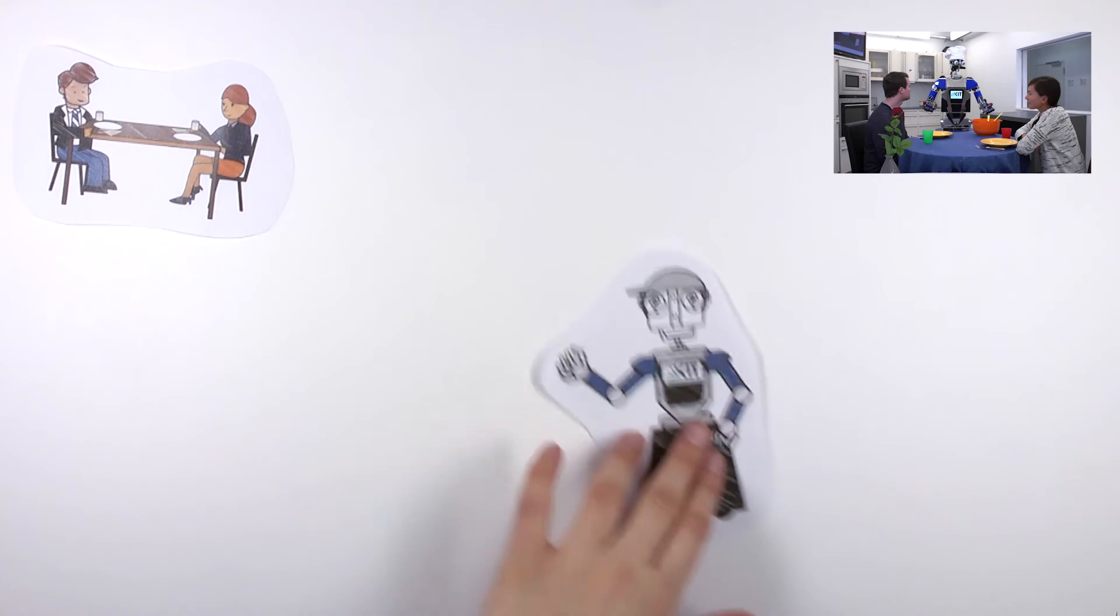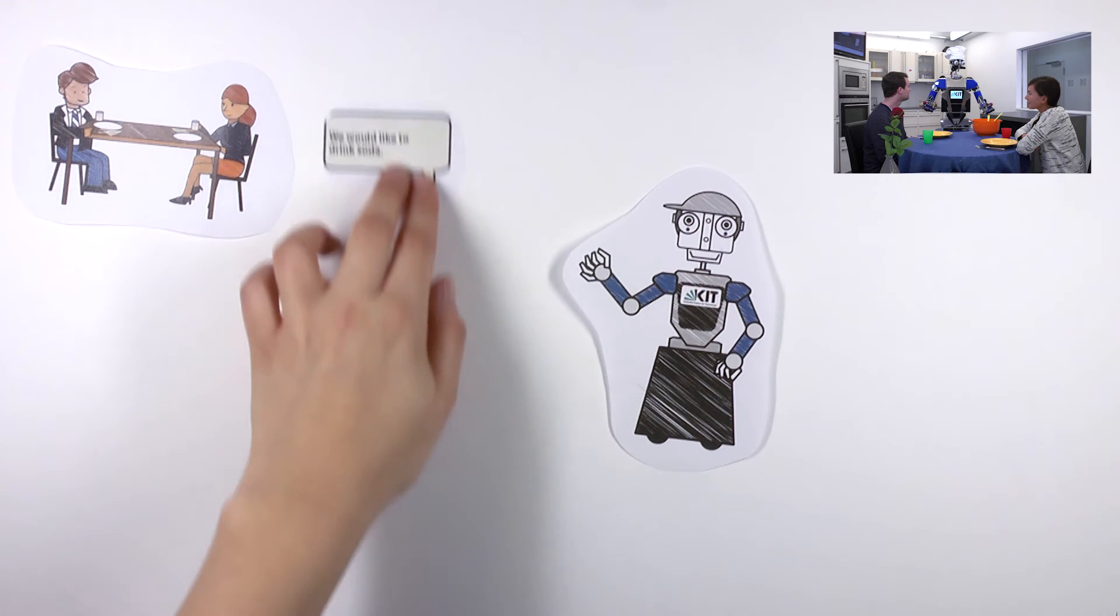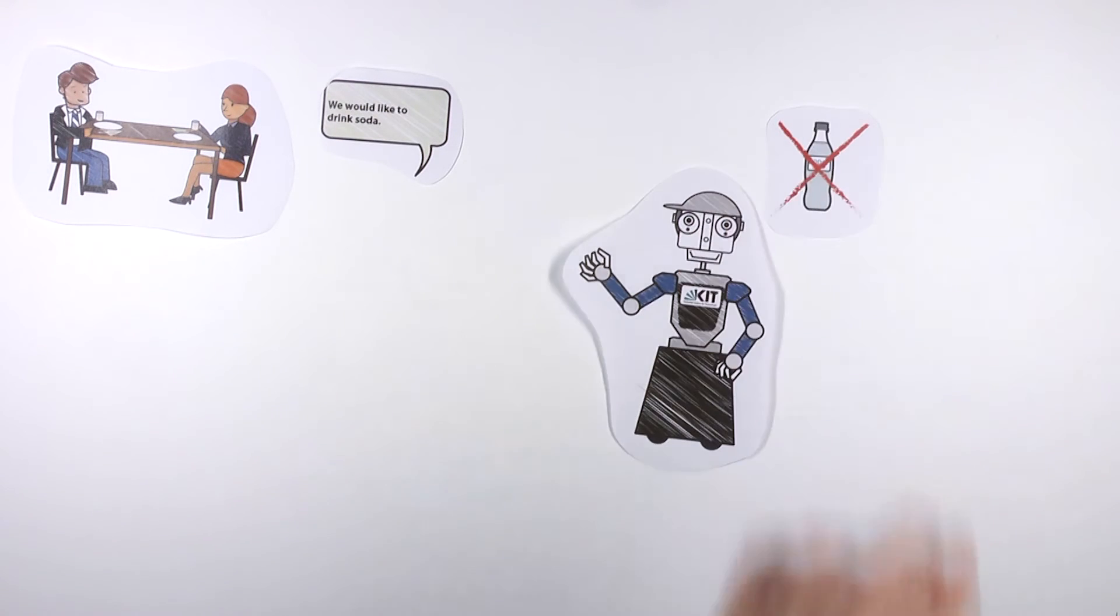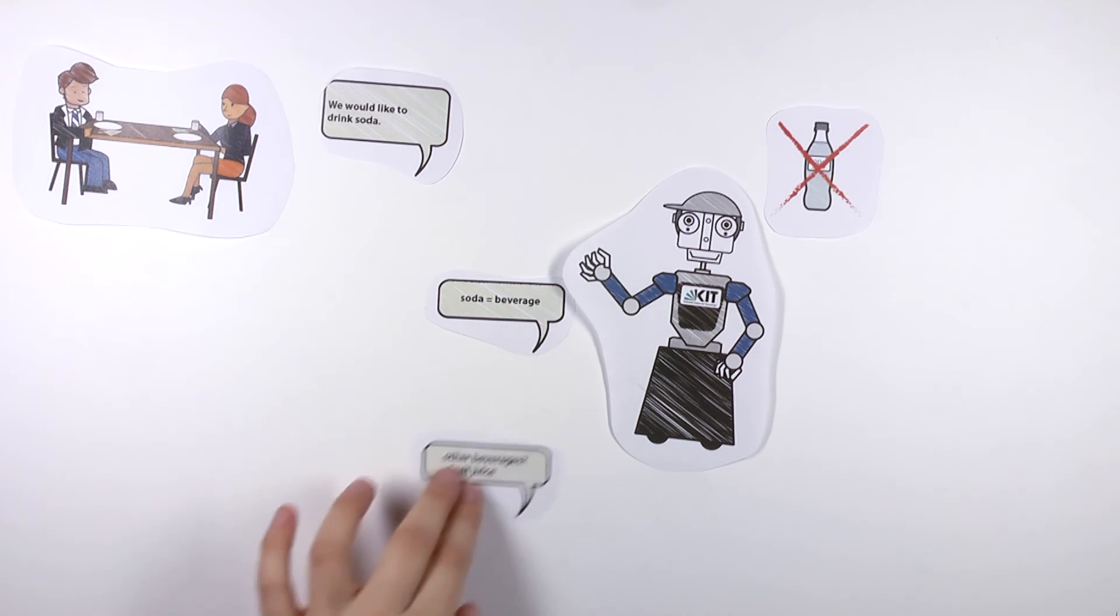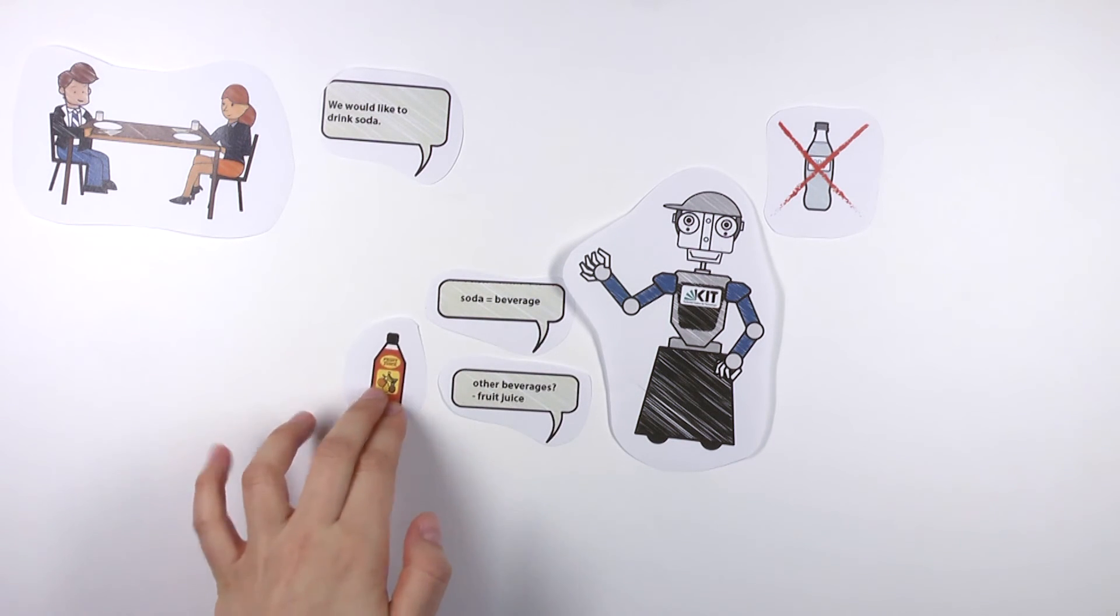When the salad is ready, Mirko and Katja sit at the table and would like a soda. But Ama knows that there is no soda. Ama has learned that soda is a beverage. It knows other beverages and knows that there is fruit juice in the fridge.